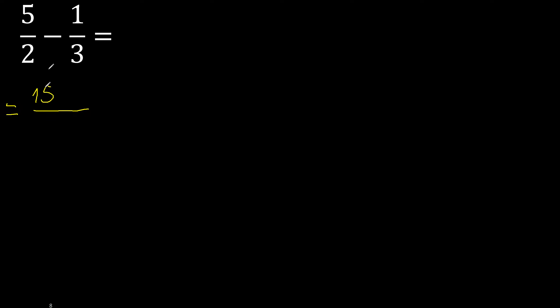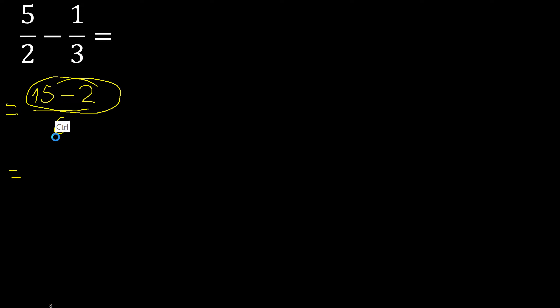First, multiply like this: 3 x 5 = 15, minus 2 x 1 = 2. Here, 2 x 3 = 6. The result is 13.